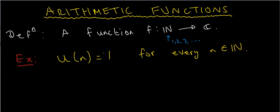Now this is a very simple function, and you might be wondering why we would consider such trivial functions like this — but it's actually quite important. In fact, we say that this function u is the inverse to the Möbius function with respect to the Dirichlet convolution. But don't worry about what all that means right now.